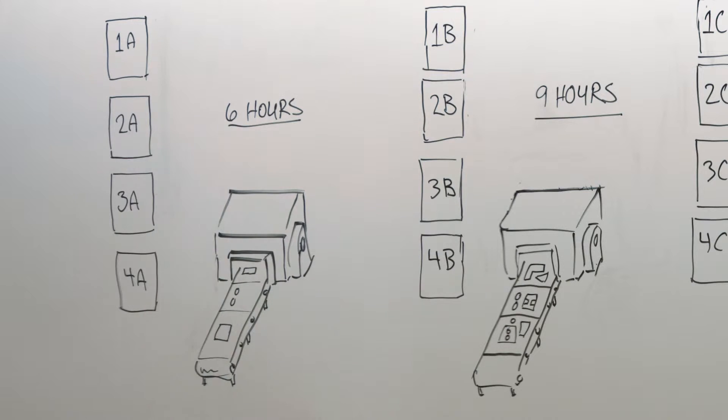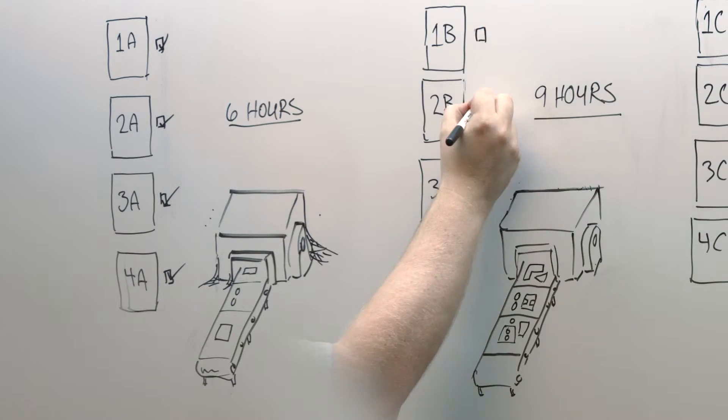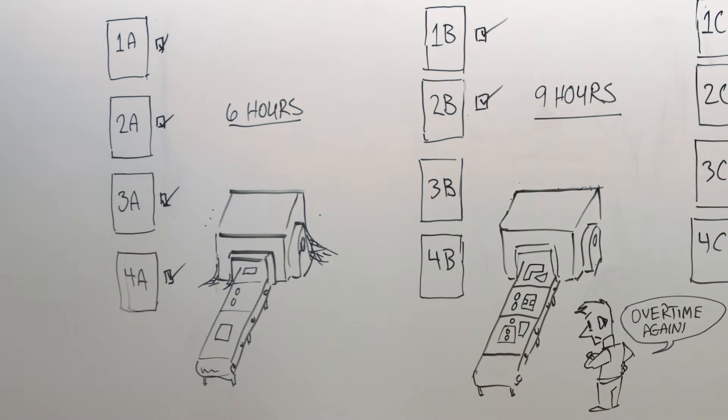Maybe machine 1 is cutting faster or has simpler parts. The result is one machine is idle while the other machine works an hour of overtime.